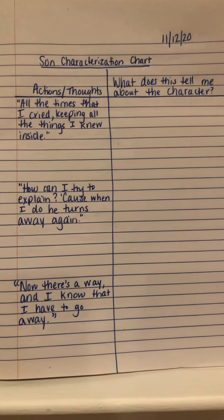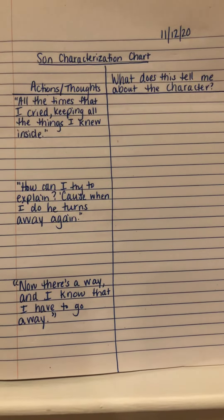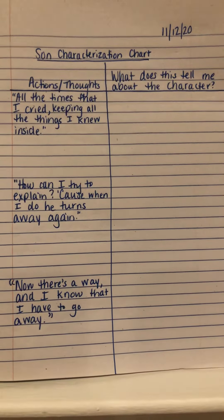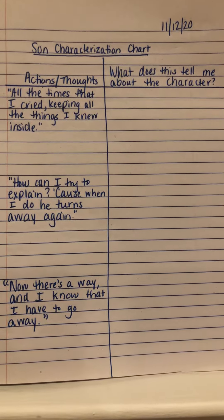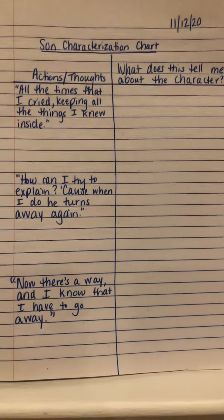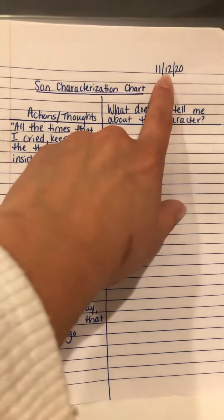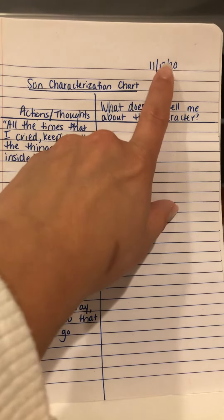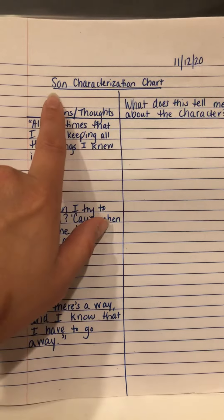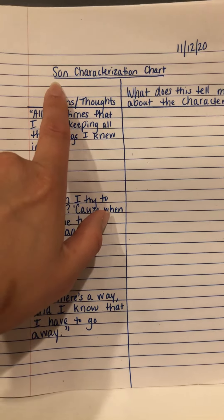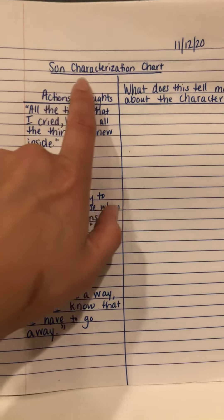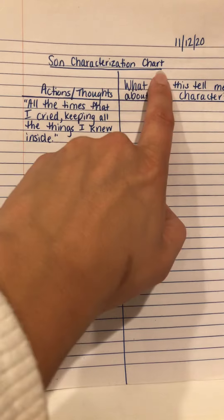Hi boys and girls, this is Mrs. DeCarlo explaining to you how you should make this chart in your notebook today. You're going to see that up here I put today's date 11-12-20, and then I skipped a line and I wrote the title of the activity: Sun Characterization Chart.